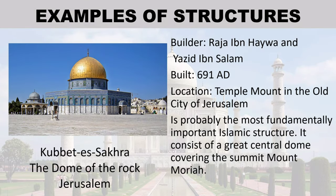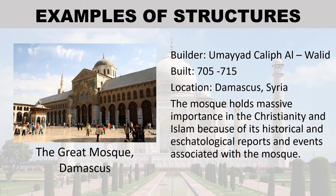Examples of structures: The Dome of the Rock, Jerusalem. Its builders are Raja ibn Haywa and Yazid ibn Salam, built approximately 691 AD. It is located at Temple Mount in the Old City of Jerusalem. This structure is probably the most fundamentally important Islamic structure. It consists of a great central dome covering the summit of Mount Moriah.